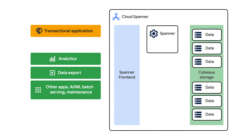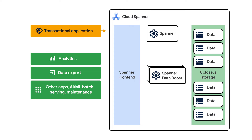With Cloud Spanner Data Boost, you can now run analytical workloads at any time without impacting your users, and without increasing the instance size. Because Spanner separates compute and storage, queries that enable Data Boost will use compute resources entirely separate from what the Spanner instance is configured with — no competing for CPU or memory with your transactional workload.